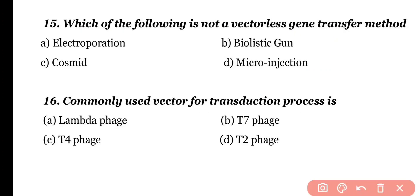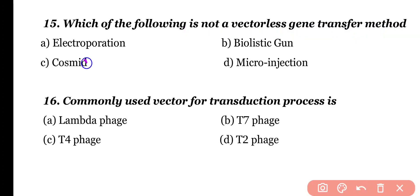Question 15. Which of the following is not a vectorless gene transfer method? Electroporation, biolistic gun, cosmid, or micro-injection. Correct answer is option C. Electroporation, biolistic gun, and micro-injection are vectorless gene transfer methods; cosmid is not.